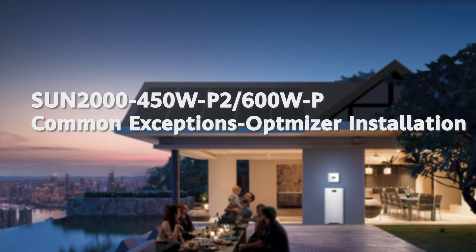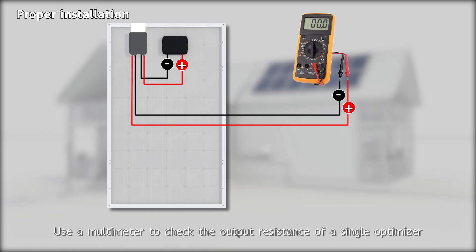Common Exceptions Optimizer Installation. Use a multimeter to check the output resistance of a single optimizer.